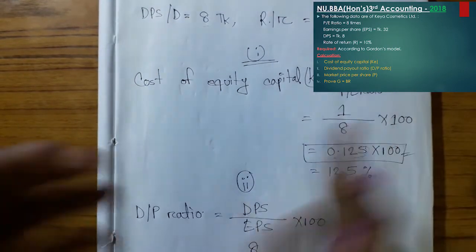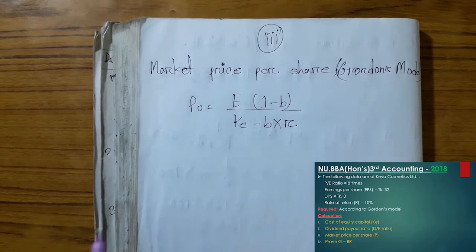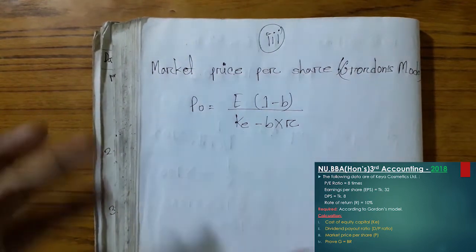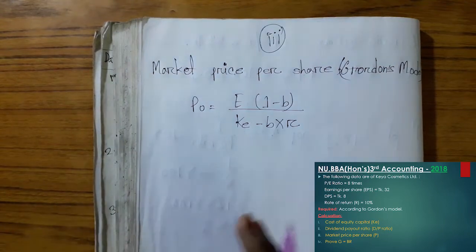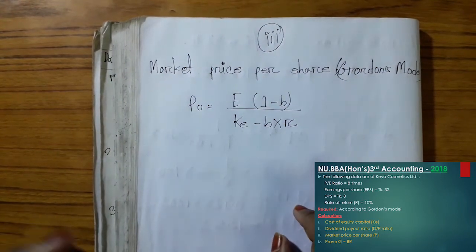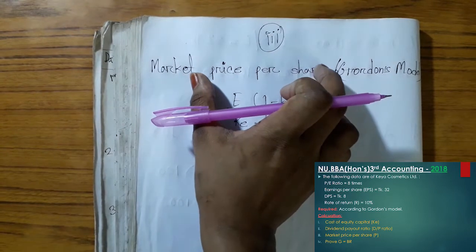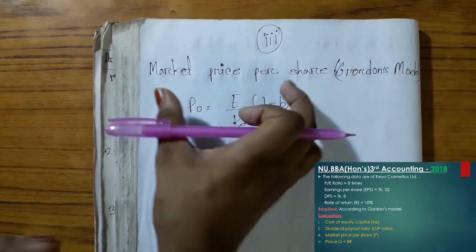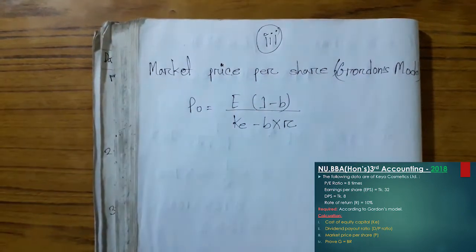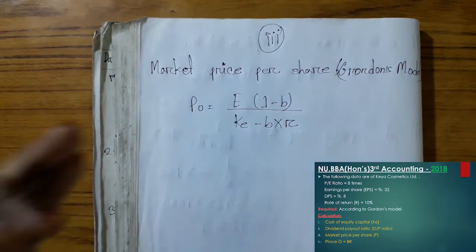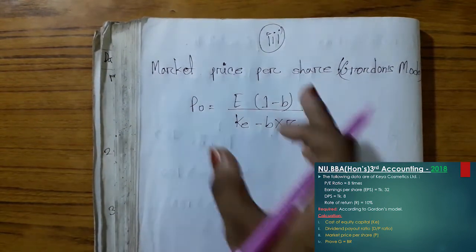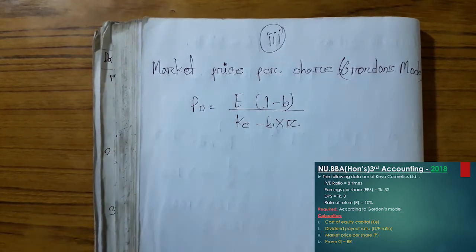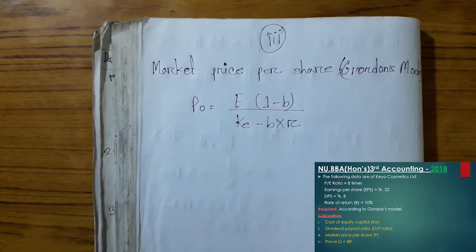Calculation number 3 is the market price per share. We need to find the market price per share. We will see which model is being applied. We have a playlist on our channel for financial management with 4 chapters, parts 1 and 2.